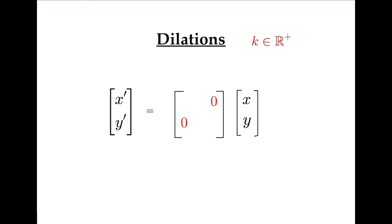If we dilate from the y-axis by a factor of k, then the x-value is multiplied by k and the y-value is unchanged, so these numbers on the main diagonal are swapped.